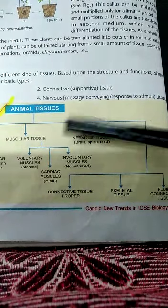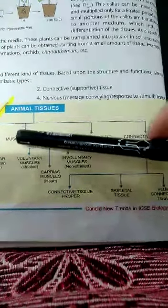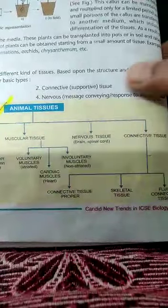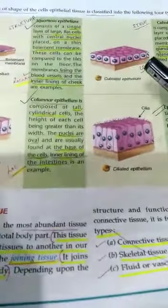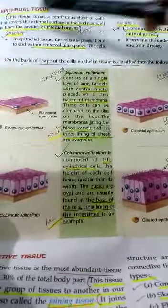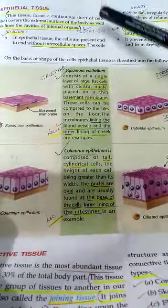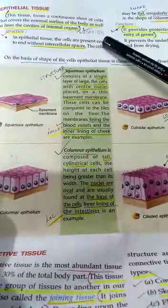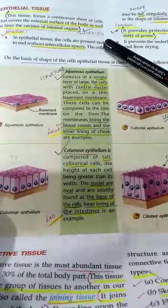Students, you will learn the flow chart given on page number 16. Let us come to the first type of animal tissue, that is epithelial tissue. First, you must know the location of epithelial tissue.